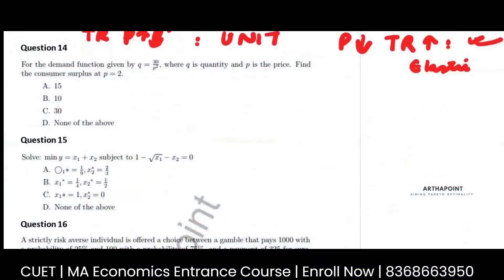For the demand function given by this, find the consumer surplus. Now, Q is equal to 30 divided by P square.